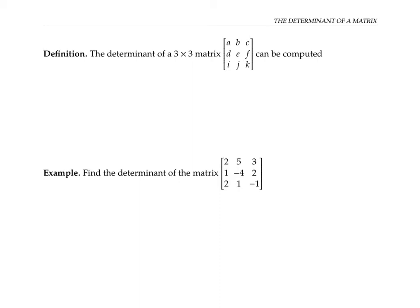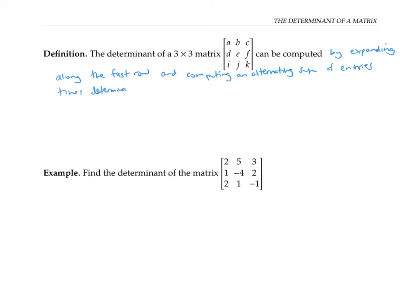Once we go up in size from a two by two matrix to a three by three matrix, things get a little more complicated. We can compute the determinant of a three by three matrix by expanding along the first row and computing an alternating sum of entries times determinants of two by two matrices. By an alternating sum, I mean you alternate adding, subtracting, adding, subtracting, and so on. Let me explain more precisely what I mean.